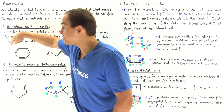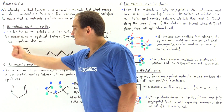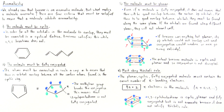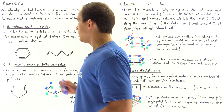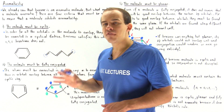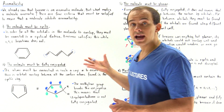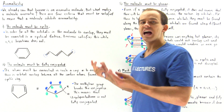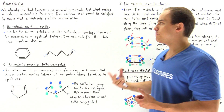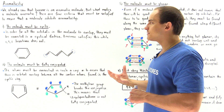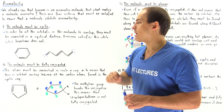In benzene, all the carbons containing our 2p orbitals interact with one another because they are found in close proximity. However, if we examine 1,3,5-hexatriene, we see that the terminal carbons are very far away from one another. Because they are so far apart on this backbone, these 2p orbitals will not overlap with one another, and so the molecule will not be aromatic.